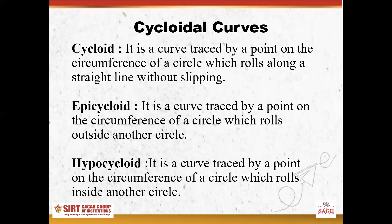The second one is an epicycloid. An epicycloid is a curve generated by the fixed point on the circumference of a circle which rolls on another circle and outside of that circle. The curve or path generated by that point is known as an epicycloid.